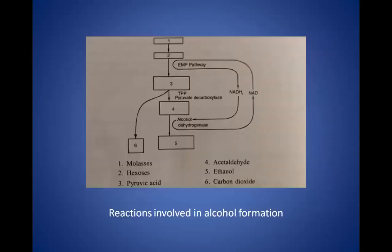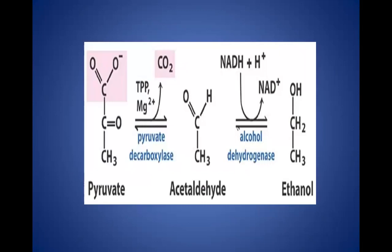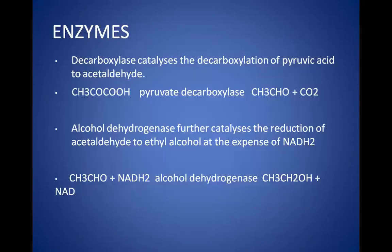The actual reactions involved in alcohol formation: molasses is converted to hexoses, then through the EMP pathway to ethanol and carbon dioxide. Alternatively: molasses → hexoses → pyruvic acid → acetaldehyde → ethanol + CO₂. The enzymes used include pyruvate decarboxylase, which catalyzes the decarboxylation of pyruvic acid to acetaldehyde, and alcohol dehydrogenase, which catalyzes the reduction of acetaldehyde to ethyl alcohol at the expense of NADH₂.